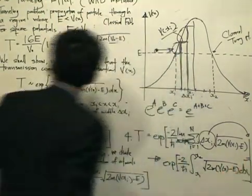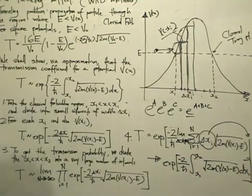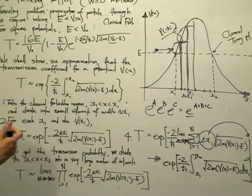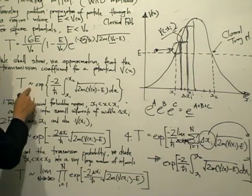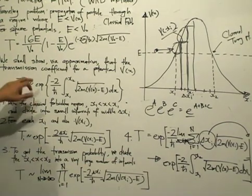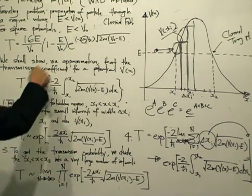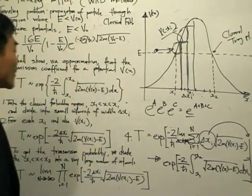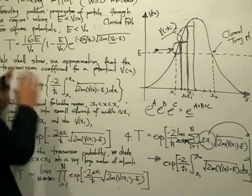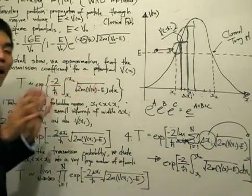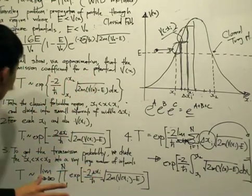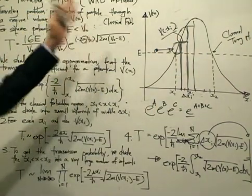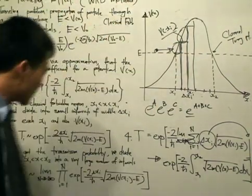This is the WKB result: the transmission coefficient T is proportional to e to the power of minus 2 divided by ℏ, times the integral from x₁ to x₂ of the square root of 2m(V(x) − E) dx. This is our approximation to get the transmission coefficient for a potential which has arbitrary spatial dependence.